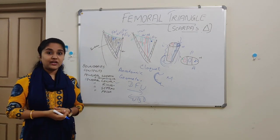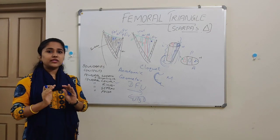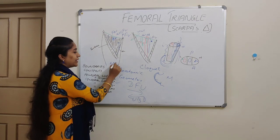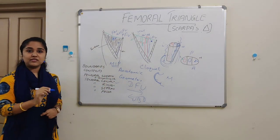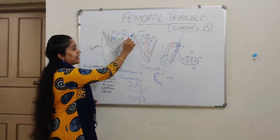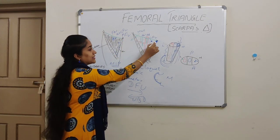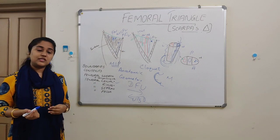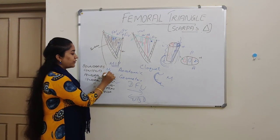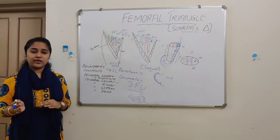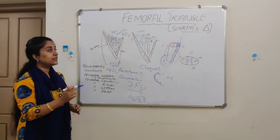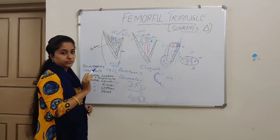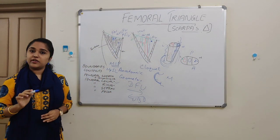The femoral artery is palpated at the mid-inguinal point — that is, the point between the anterior superior iliac spine and the pubic symphysis. There is another point called the midpoint of the inguinal ligament, which is between the anterior superior iliac spine and the pubic tubercle. These are two different points.